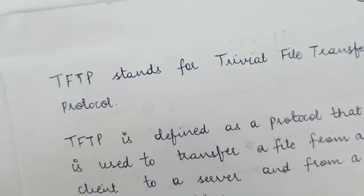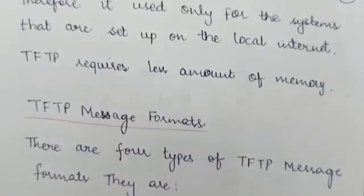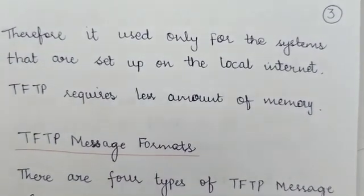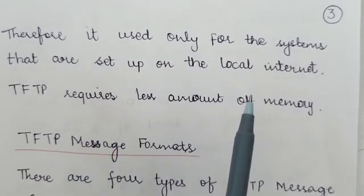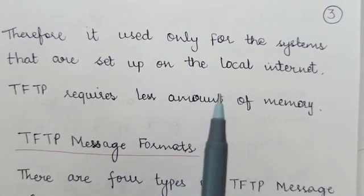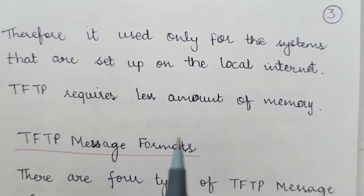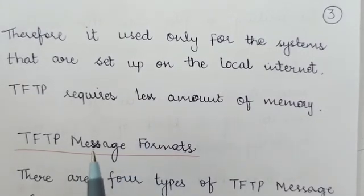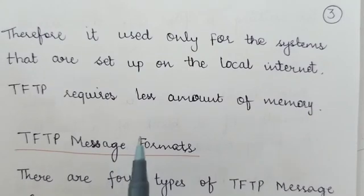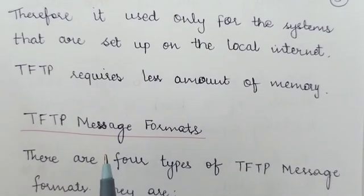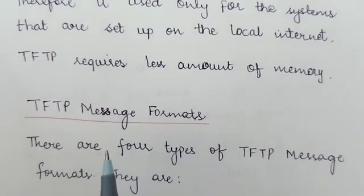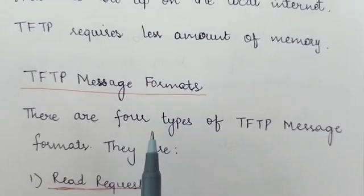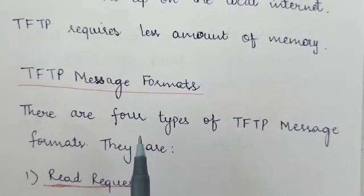So where is TFTP used? It is used only for systems that are set up on the local network. Local networks are LANs, which are usually used within a building or within a campus. This is where TFTP is majorly used — on the local network. TFTP also requires less amount of memory.